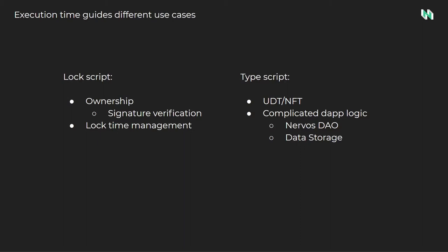At the highest level, both lock scripts and TypeScripts serve a similar purpose — they both validate the current transaction and have access to all input and output cells within it. However, when they execute is different, and this means their concerns are also different. The concern of a lock script is ownership and security. It contains the conditions that must be met for a cell to be unlocked. The most common method is SECP256K1 signature validation. Time-based conditions and complex conditions based on transaction structure are also common for more advanced smart contracts.